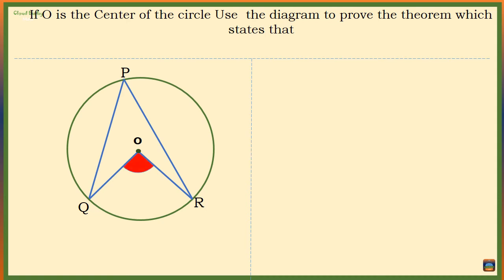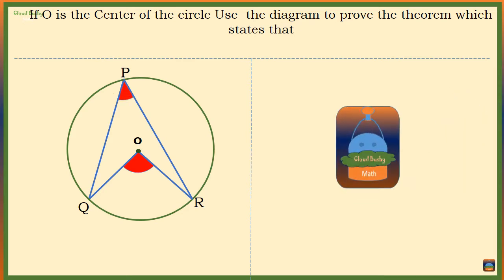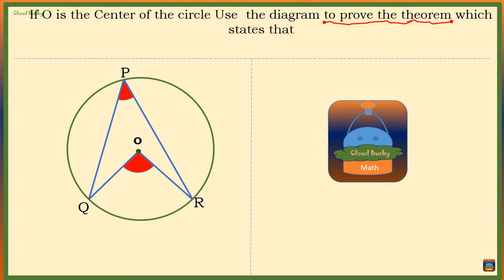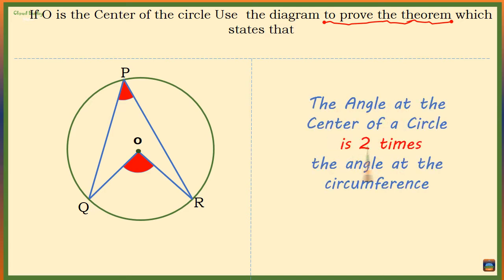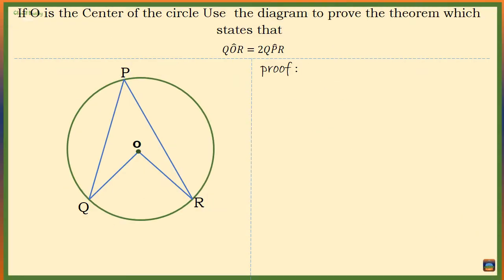The angle at the center is two times the angle at the circumference. Welcome to our channel. Today we want to prove the circle theorem which states that the angle at the center of a circle is double the size of the angle at the circumference. This theorem is true provided both angles are subtended by the same arc or the same chord. Looking at our diagram, we need to show that angle QOR is two times the size of angle QPR. For our proof we are going to use the properties of isosceles triangles.